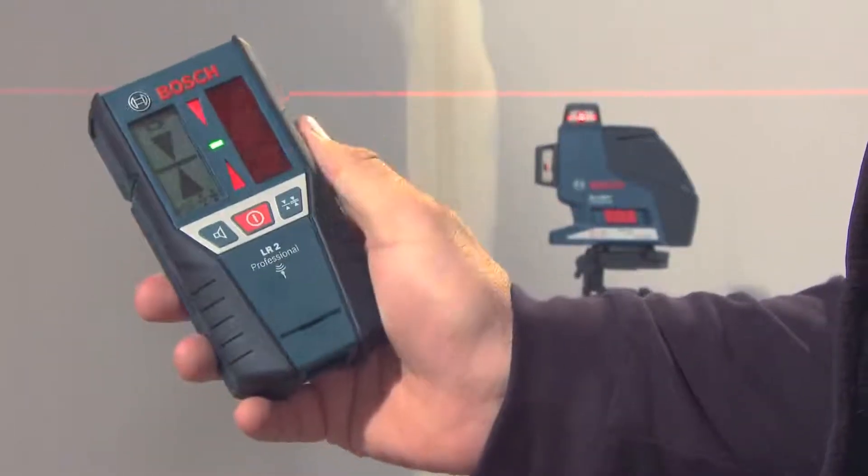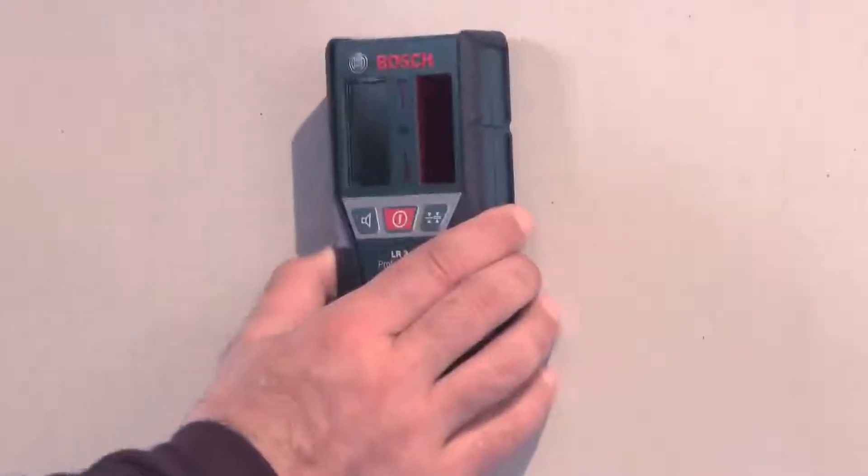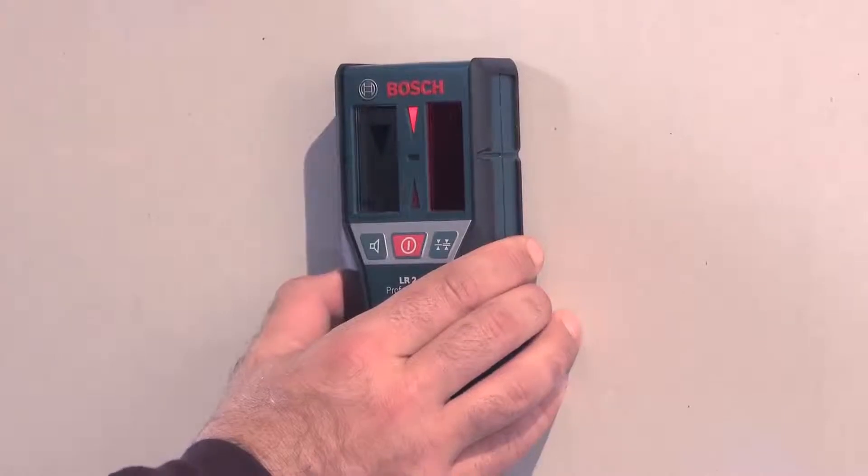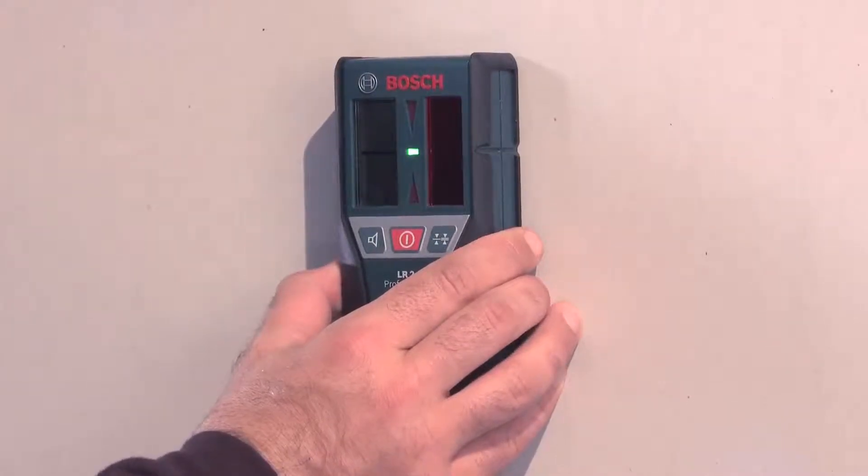With the help of the receiver, the GLL 380P Professional has a range of up to 80 meters diameter. The receiver uses light-emitting diodes and acoustic signals to indicate when the laser beam is perfectly aligned.